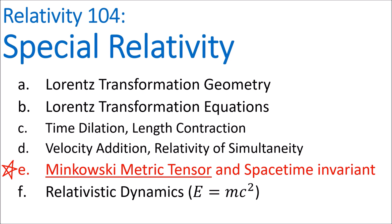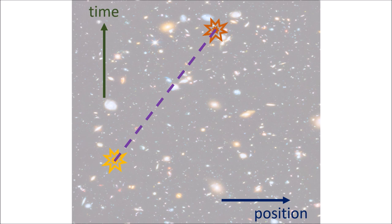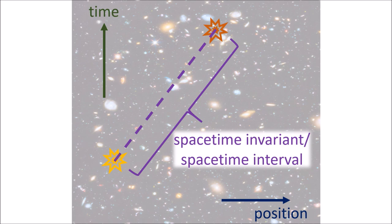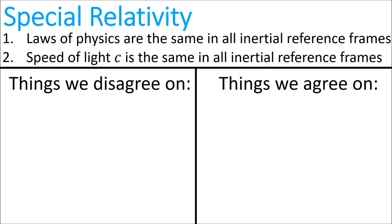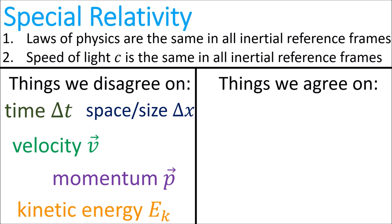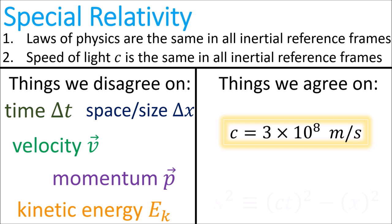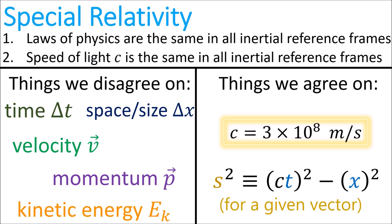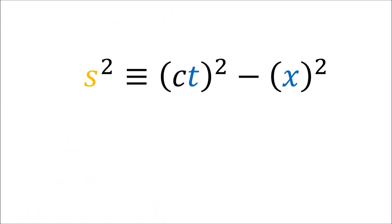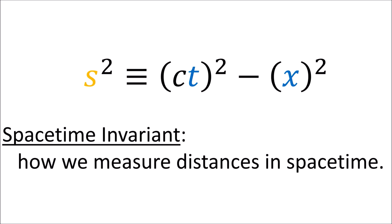In this video we're going to look at the Minkowski metric tensor and the spacetime invariant. The spacetime invariant, also called the spacetime interval, is a way to measure a kind of distance between two events in spacetime in special relativity. We're going to introduce a new quantity that all inertial frames agree on, which is the spacetime invariant s squared for a vector, which equals ct squared minus x squared.